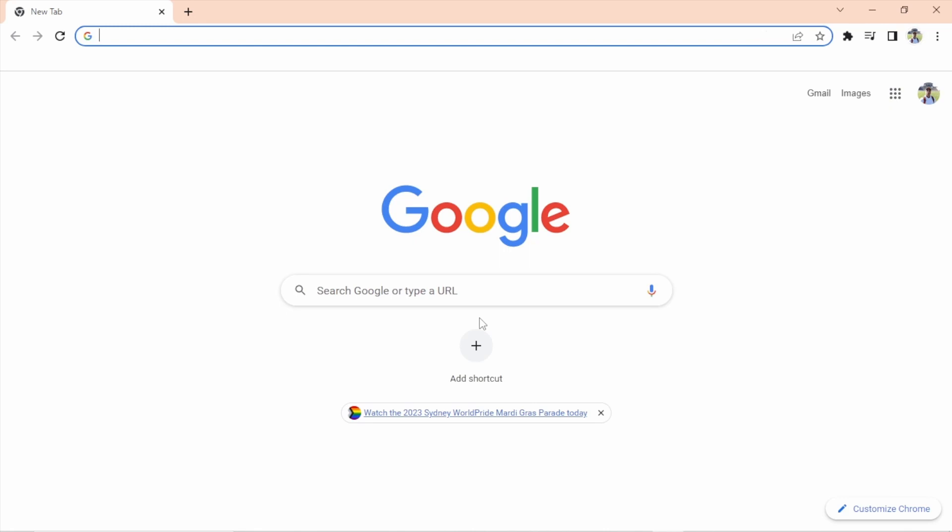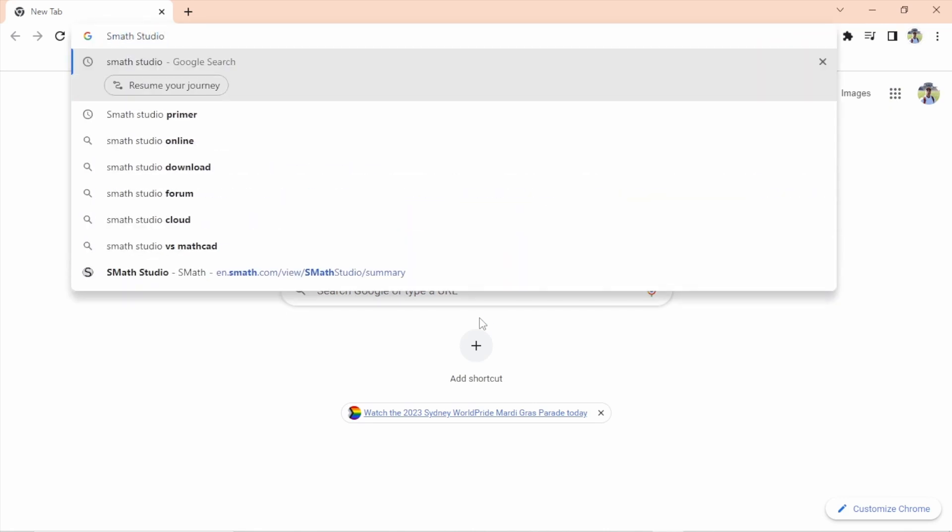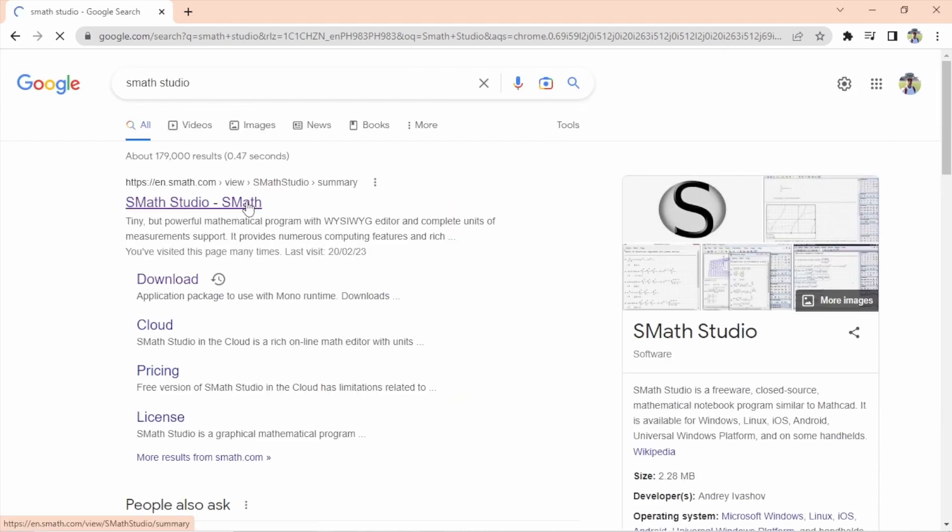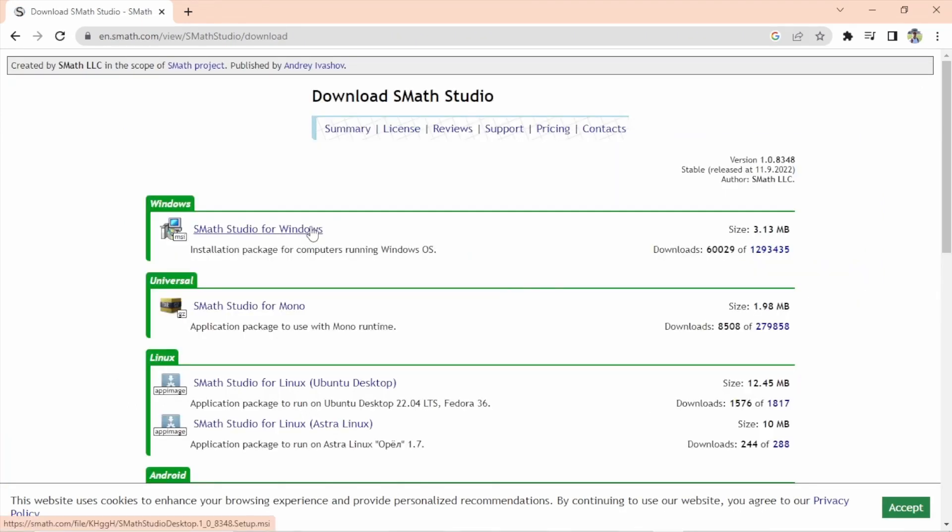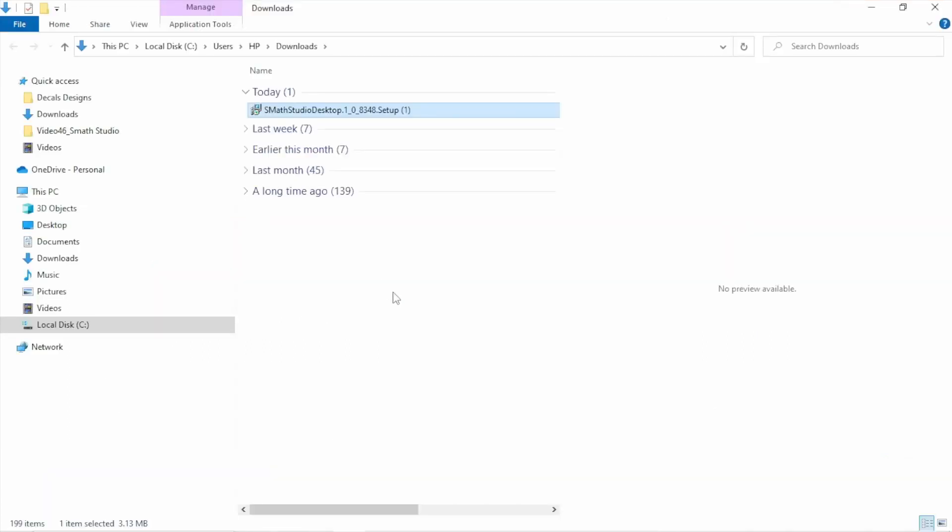To download Smath Studio, search Smath Studio using your favorite browser. Click the download link to start downloading. Once the download is complete, go to the download folder and double-click the icon to start installation.